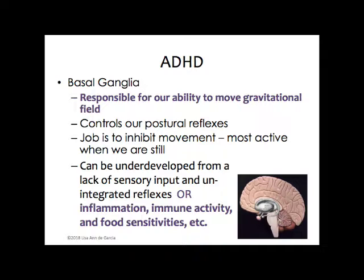The basal ganglia can be underdeveloped from either a lack of sensory input and unintegrated reflexes — if the reflexes are unintegrated, the basal ganglia is not developed — or from inflammation, immune activity, and food sensitivities. Just as gluten can directly attack the cerebellum, things can directly attack the basal ganglia because it's metabolically very active. For example, PANDAS is a disorder with autism-like symptoms that starts right after a strep-type infection, meaning the virus has attacked the basal ganglia.